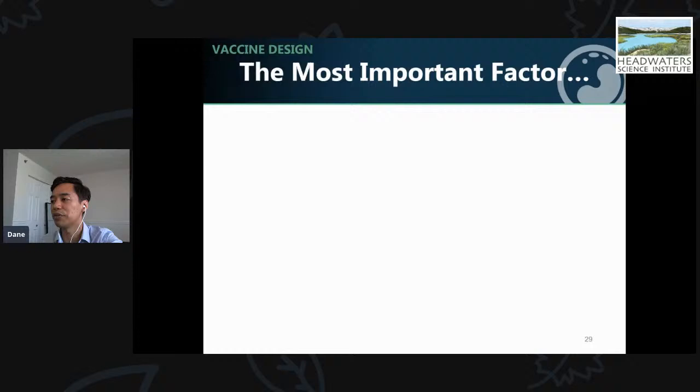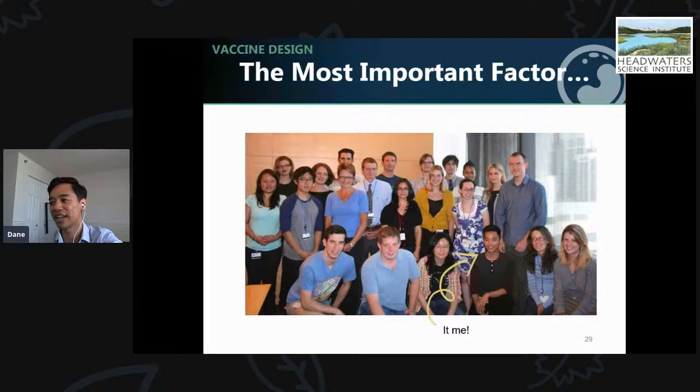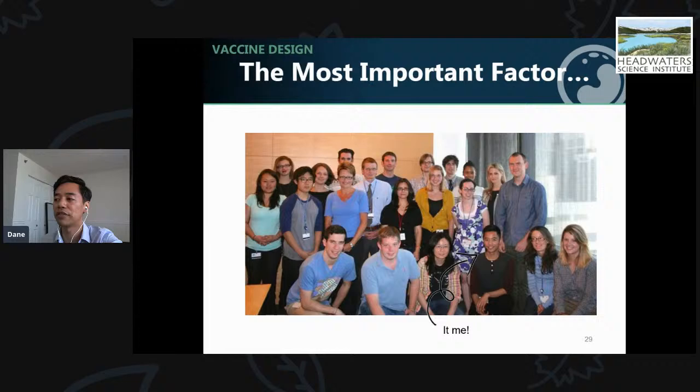The most important ingredient for creating an effective vaccine is people. You need teams of scientists and physicians who specialize in all of those steps. Vaccine research takes teams of labs from all over the world. Technology is not advanced enough to replace researchers with robots yet, so until that day, we need hardworking scientists with creative and innovative minds to tackle these problems.